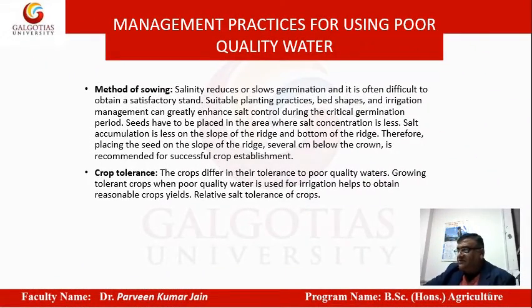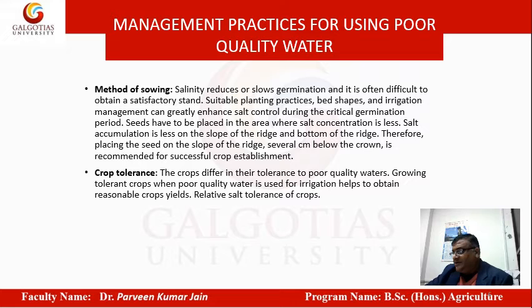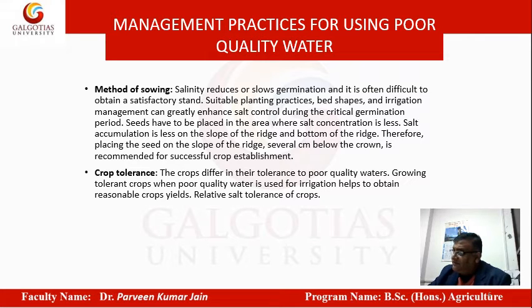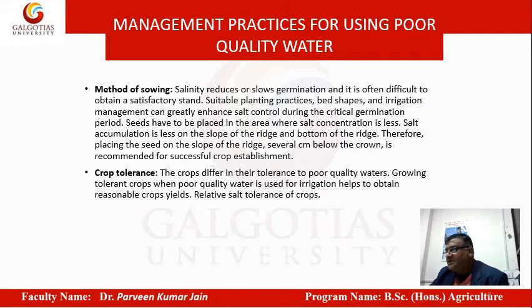Management practices also include the method of sowing. Salinity reduces or slows germination, making it difficult to obtain a satisfactory stand. Suitable planting practices, bed shapes, and irrigation management can greatly enhance salt control during the critical germination period. Seeds should be placed in areas where salt concentration is less, such as on the slopes of the ridge. These are agronomic alterations that can help make use of problematic water for growing crops.